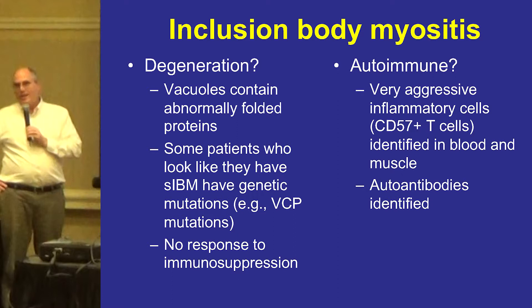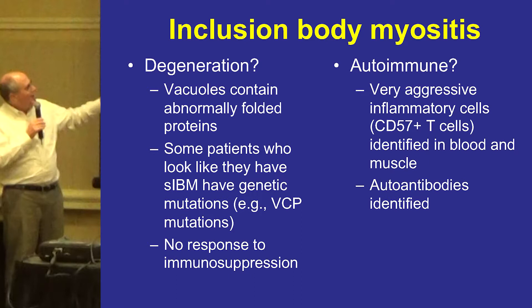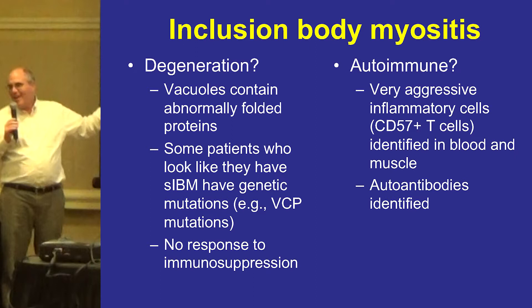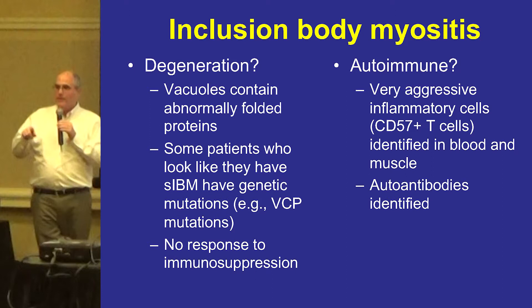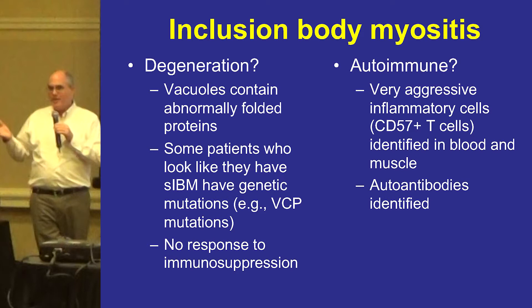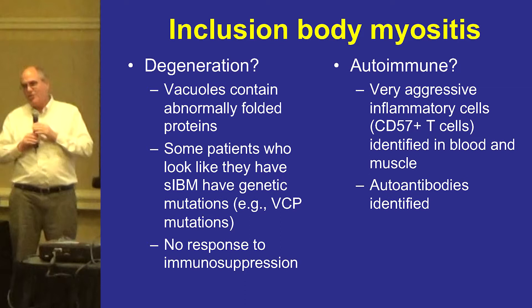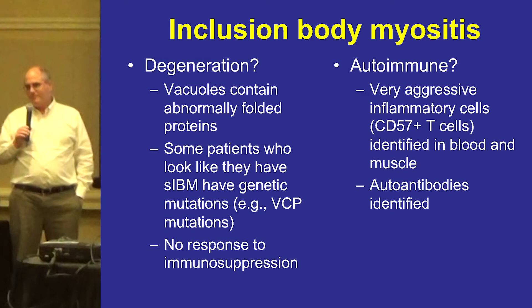In Steve Greenberg's cohort, about 60% of his patients fit the category of having enough of these cells to fulfill that T-LGL diagnosis. In other cohorts it might be smaller. Some patients truly do have T-LGL with other manifestations — their white blood cell population is being attacked, or they have other organ system involvement. But most IBM patients, even those who fulfill the criteria, do not have these other disease manifestations. This has only been figured out in the last year or two, so we're still trying to understand it.